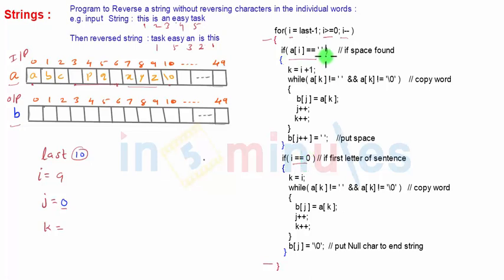So are you at space, or are we at the first character? So when i is 9, this is false, this is also false. i becomes 8, again false, false. If will not work. Again it goes for i equal to 7, again both the conditions are false.